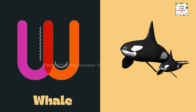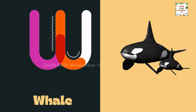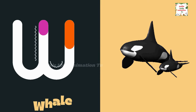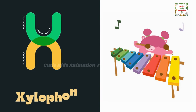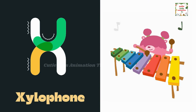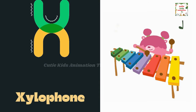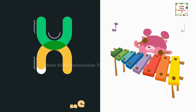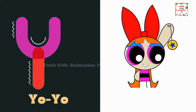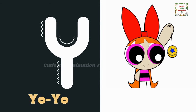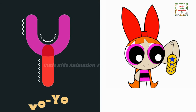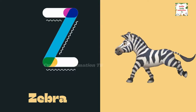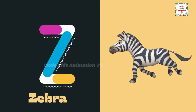W is for whale. W, W, W. X is for xylophone. X, X, xylophone. Y is for yoyo. Y, yoyo. Z is for zebra. Z, Z, zebra.